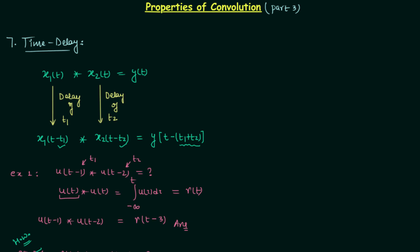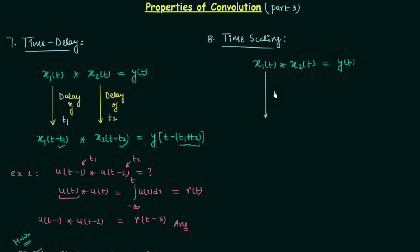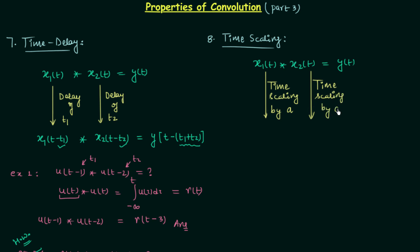Now we will move to property number 8, which is known as the property of time scaling. To understand this property, let's take two signals x1(t) and x2(t). After convoluting them, the resultant signal is y(t). We will then perform time scaling of x1(t) by a, and time scaling of x2(t) by the same amount a, giving us x1(at) and x2(at).